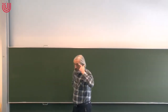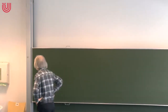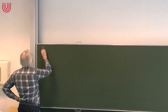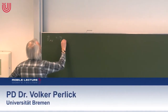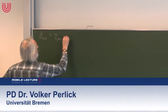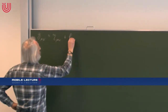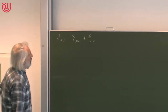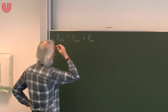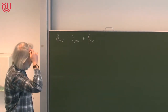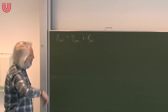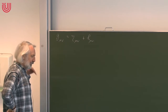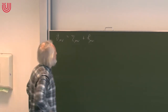Let's continue where we stopped last time. We were discussing the linearized field equation. Linearized field equation means we write the metric in the form η_μν (Minkowski metric) plus h_μν, and we linearize all expressions with respect to h_μν and its derivatives — in particular with respect to the first derivatives. The field equation is linear in the second derivative anyway.